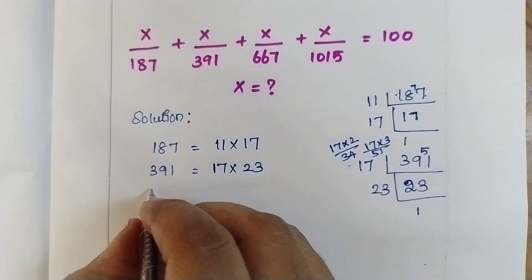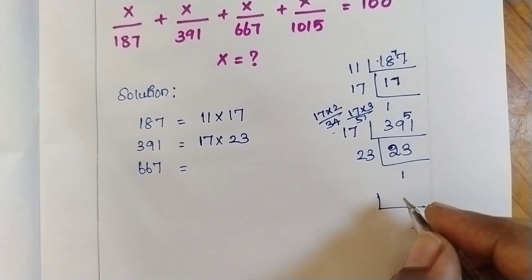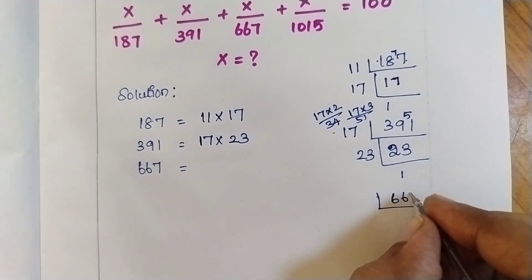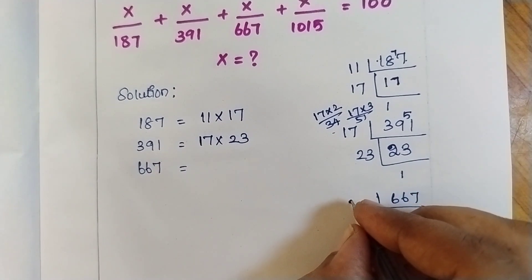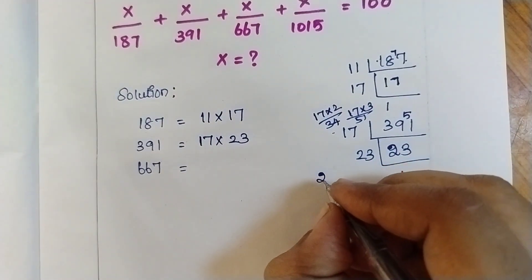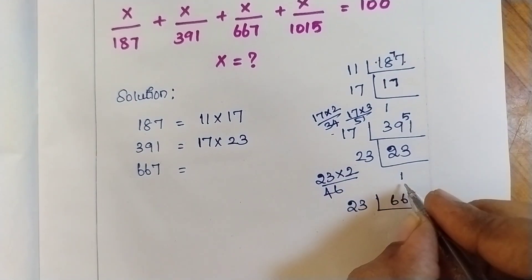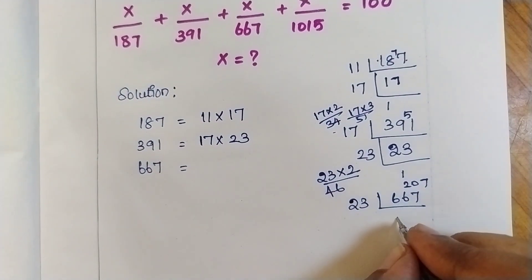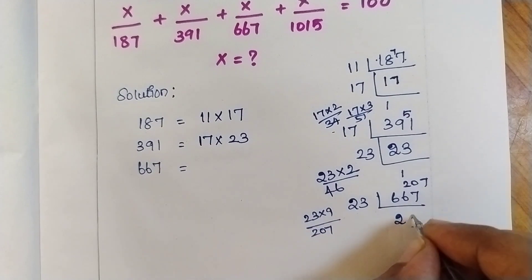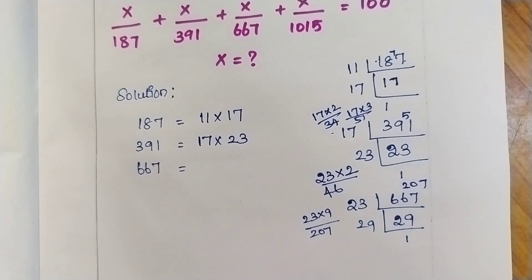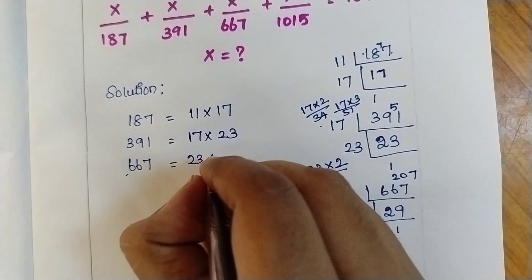Similarly we need to find the factors of 667. Using the LCM method for 667 — it will come in the 23 table. 23 times 2 is 46, so after 46 we have 207. 23 nines are 207, so it comes 9 times. So the multiples of 667 are 23 into 29.